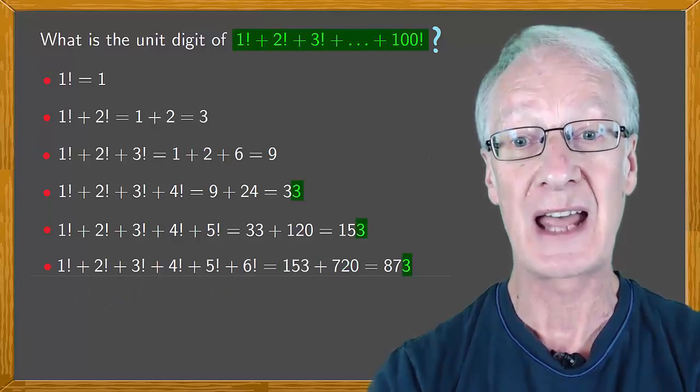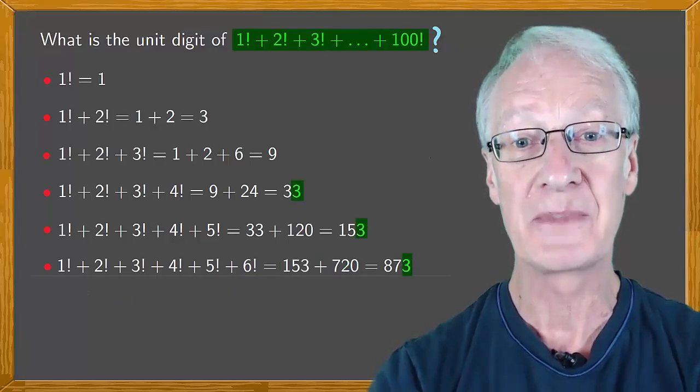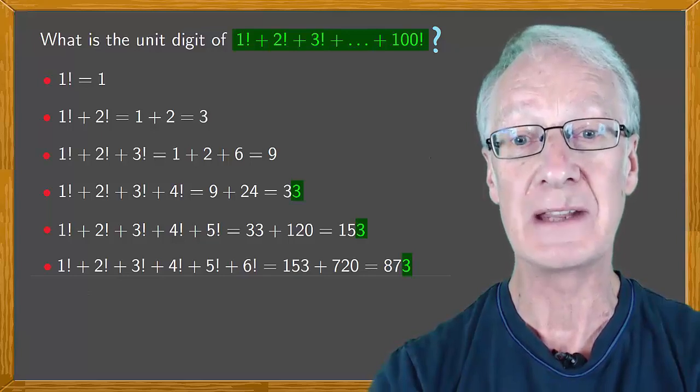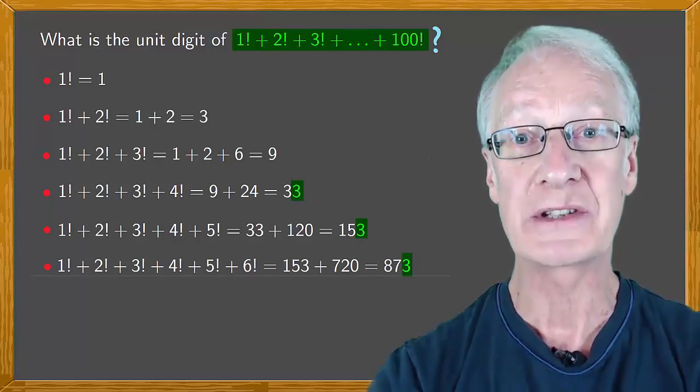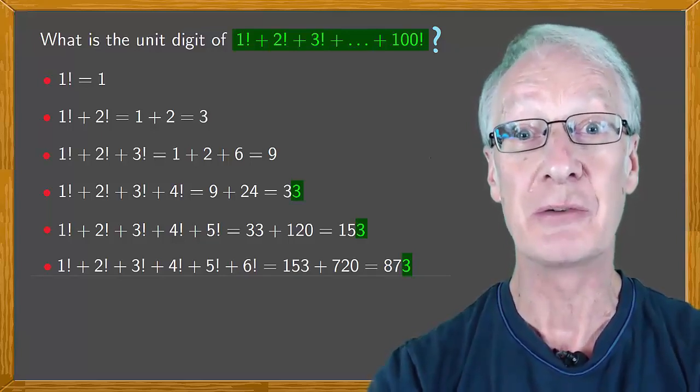Notice that in the last three results the final digit has been 3. Is 3 always going to be the unit digit from now on?